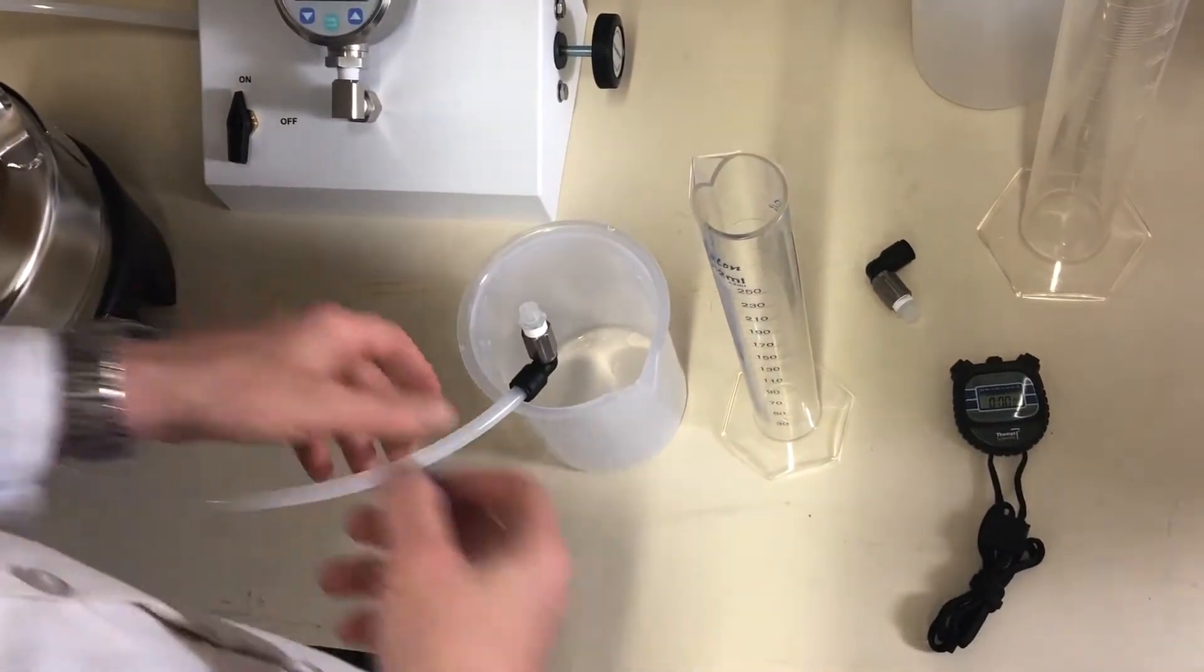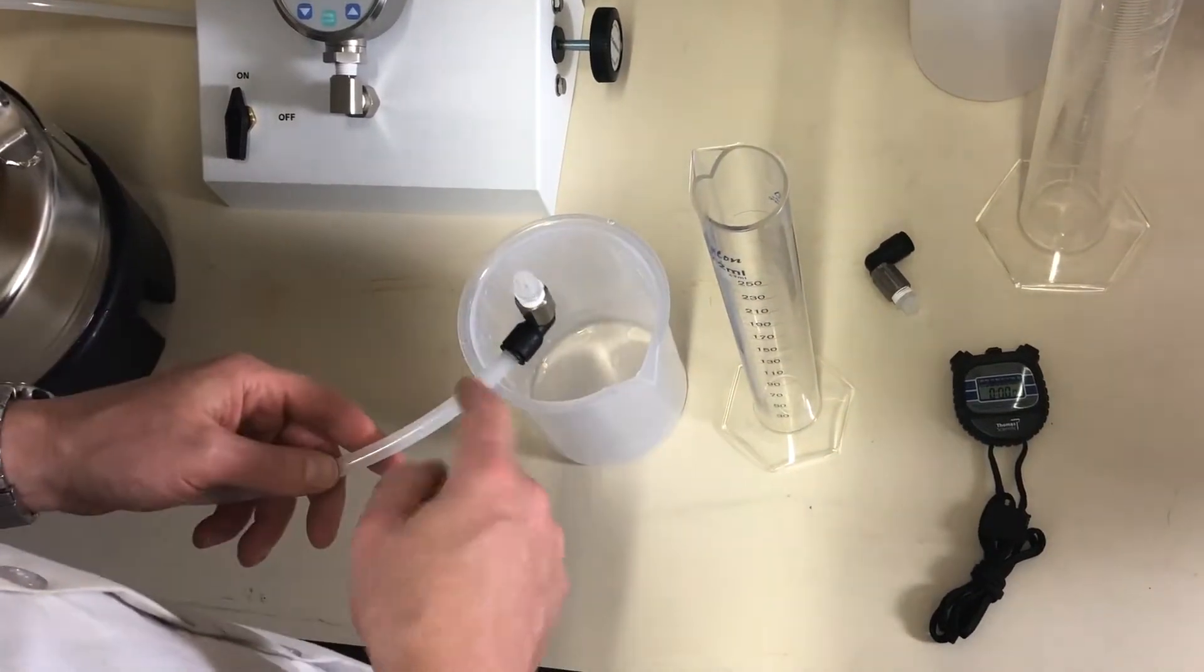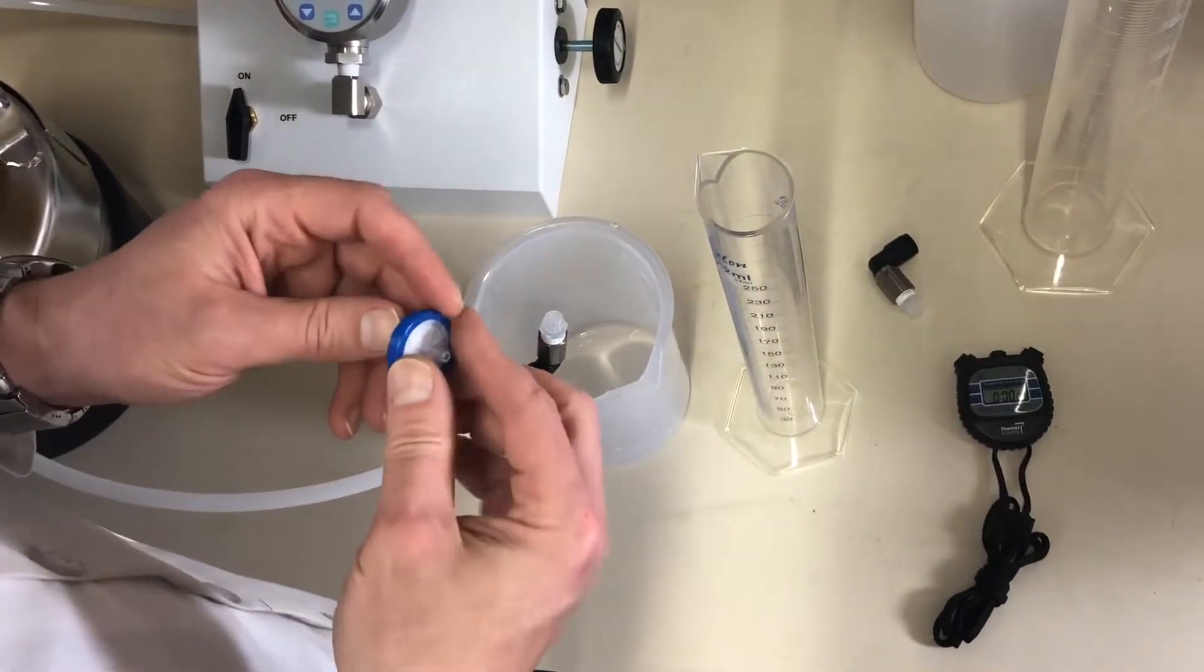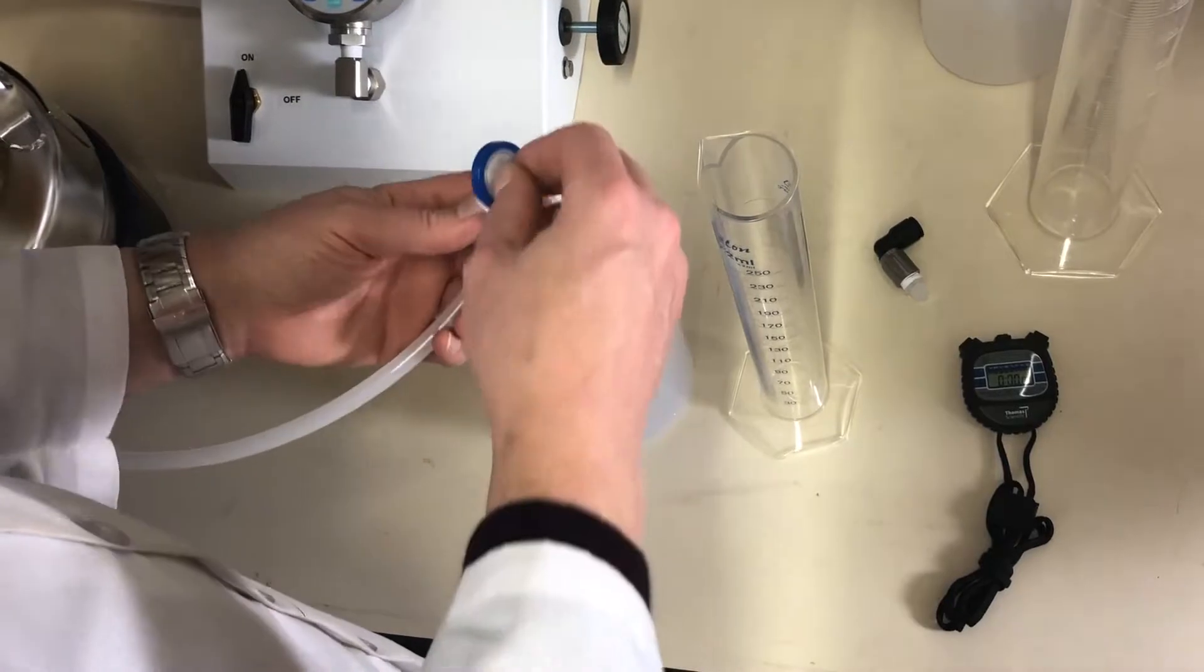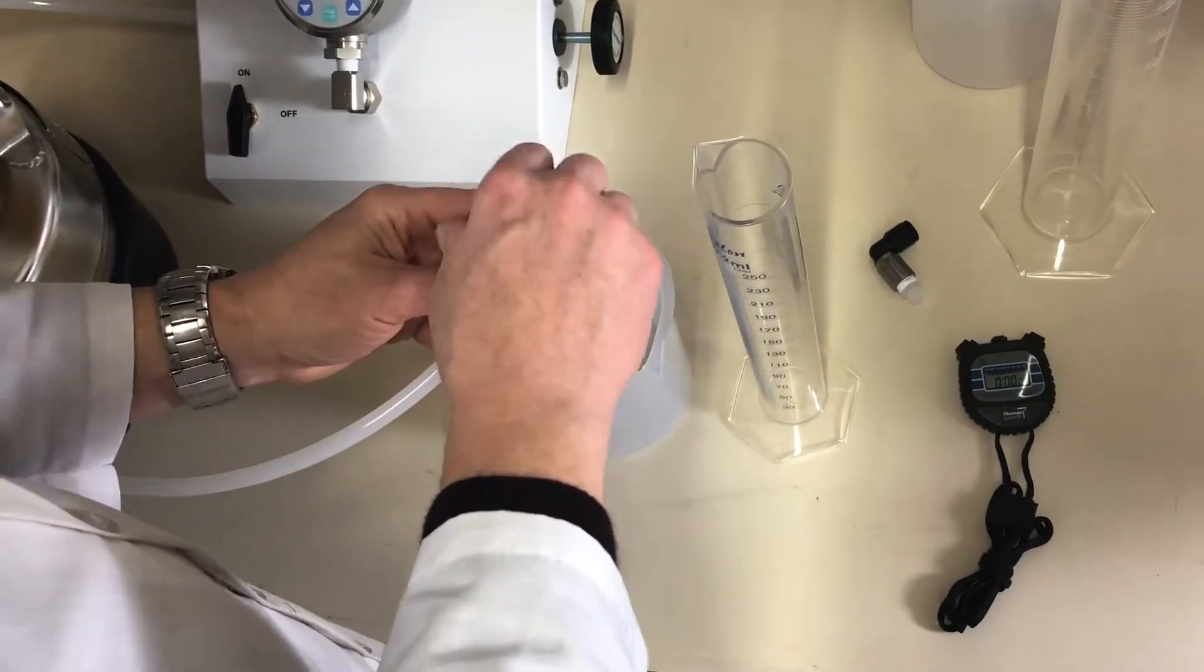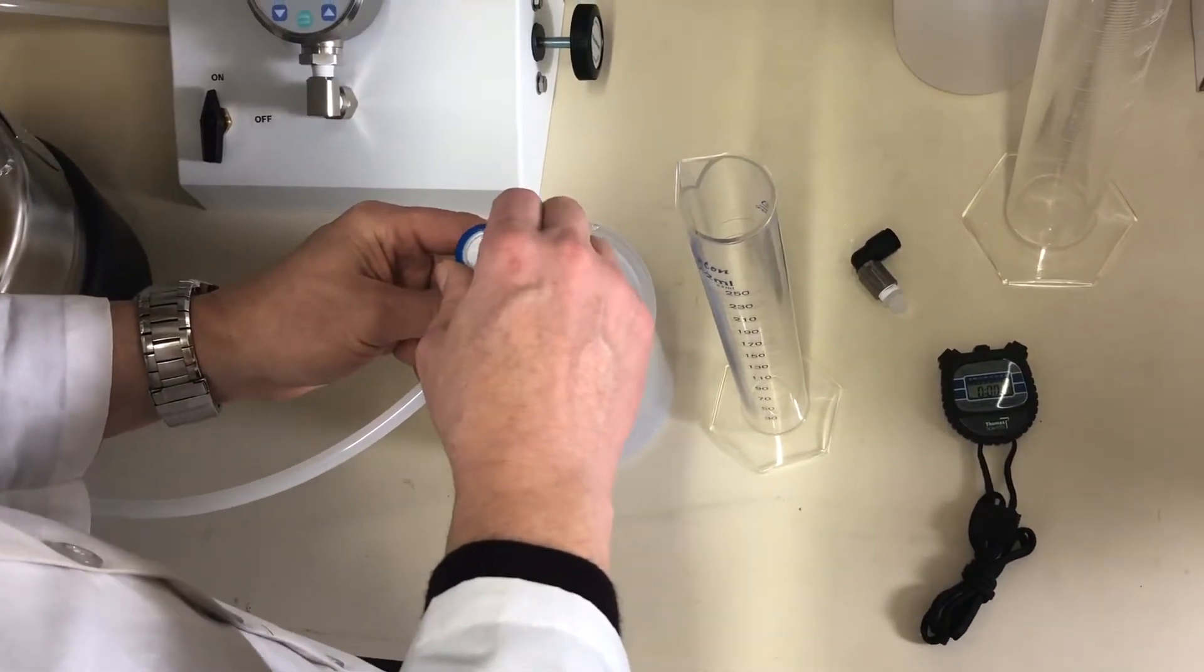We turn the fitting so that it's facing upward on the outlet tubing. Attach the test filter by installing and twisting until it's tight.